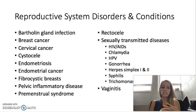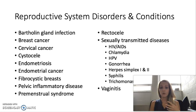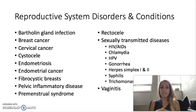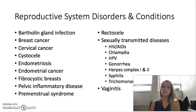Pelvic inflammatory disease, also known as PID, is when the reproductive organs become inflamed and infected by bacteria, viruses, or parasites. It can cause vaginal discharge, pain, even a low-grade fever, and most of these are associated with the presence of an STD causing that pelvic inflammatory disease.